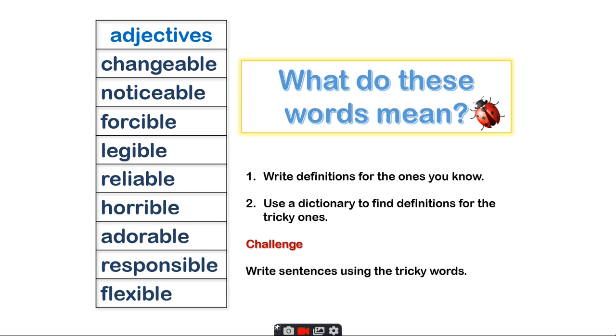Here's your first task. You're going to need to pause the video once I've finished speaking. Here are some adjectives: changeable, noticeable, forcible, legible, reliable, horrible, adorable, responsible, and flexible. I want you to write down the definitions for the ones that you know, and then use a dictionary to find the definitions for the trickier ones. If you can, write a sentence using the trickier words. Pause the video now.